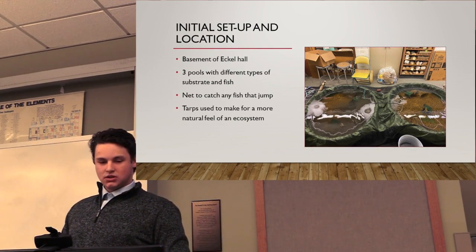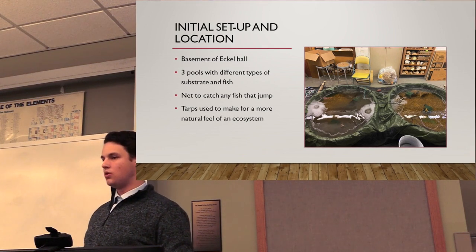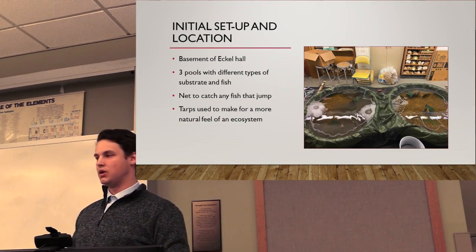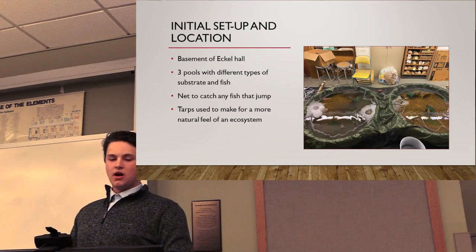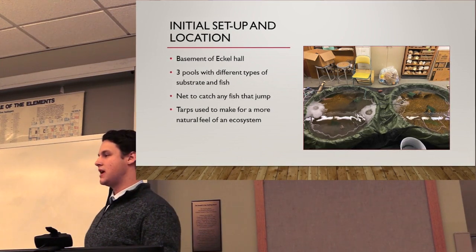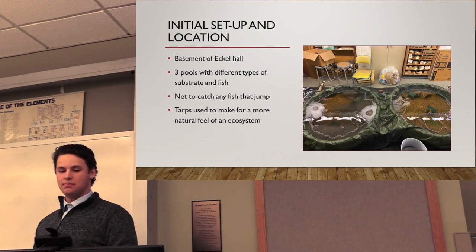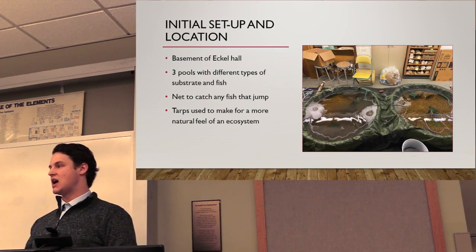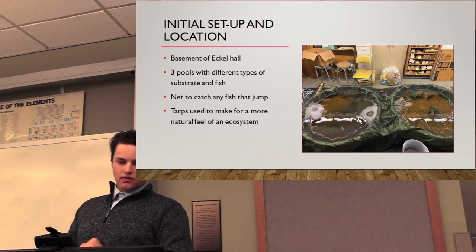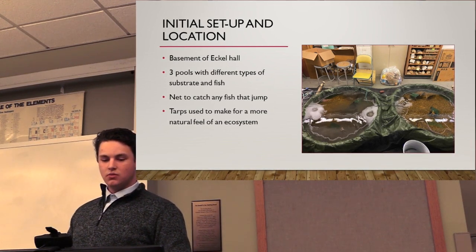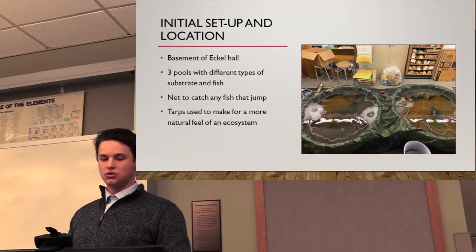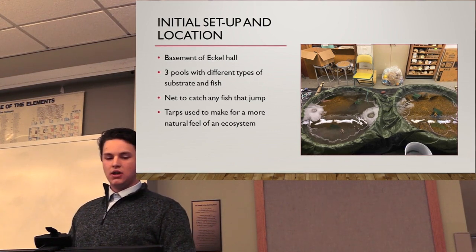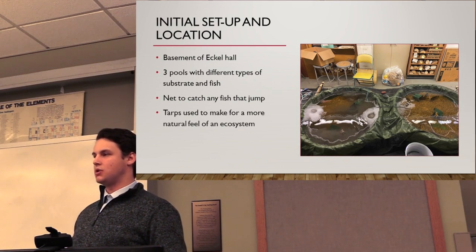I started out with three kiddie pools — one with my control, one with substrate one, and one with substrate two. At first I used chlorinated tap water, but I ended up seeing a small die-off in fish and needed to change that, so I ended up using lake water. I kept my control as chlorinated tap water, then moved my turbidity tanks to lake water and used algae as the turbidity. I used a turbidity meter — you take a small beaker sample, put it in, light goes through it, and it calculates how turbid the water is. I did that weekly to make sure the turbidities were kept up to what I wanted.